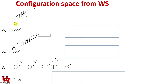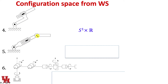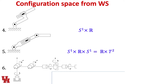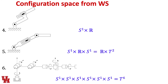A rotational joint and a prismatic joint gives S¹ cross R. A rotational, prismatic, and rotational configuration is S¹ cross S¹ cross R, which is R cross the two-dimensional torus. The order of these elements doesn't matter for the configuration space. Finally, six rotational joints gives S¹ repeated six times — the six-dimensional torus.